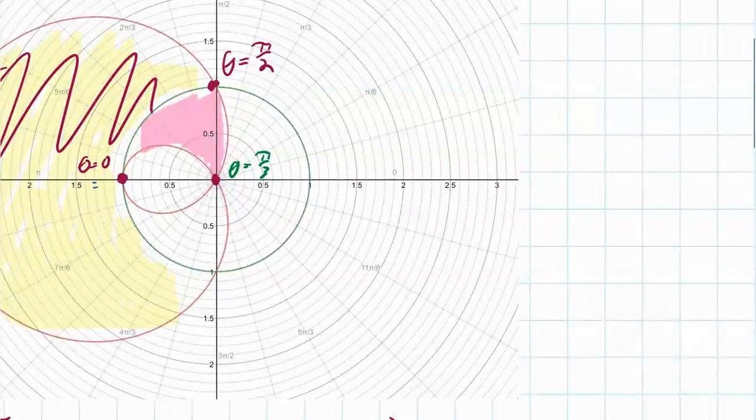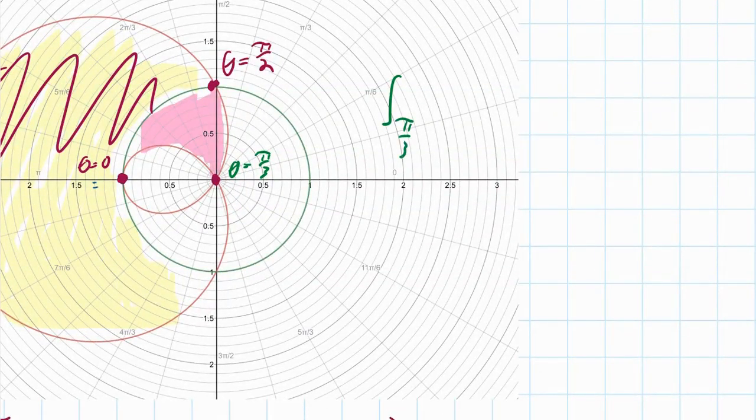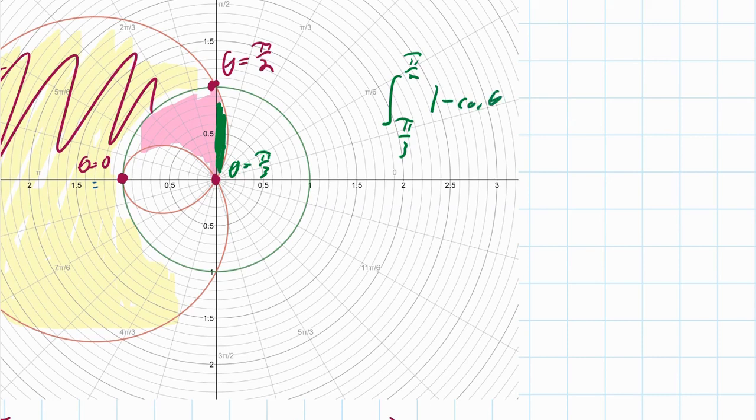So if I do an integral from pi over three to pi over two, that's going to get this sliver here going. And that's going to be the integral of one minus the cosine of theta squared, one-half times with a d theta. That's that little sliver.